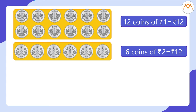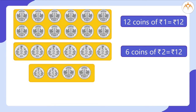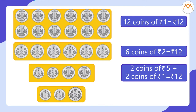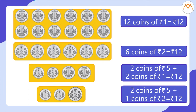Other combinations could be 2 coins of 5 rupees plus 2 coins of 1 rupee is equal to 12 rupees. Or 2 coins of 5 rupees plus 1 coin of 2 rupees is equal to 12 rupees. And you can think of more combinations of coins of 1, 2, and 5 rupees.